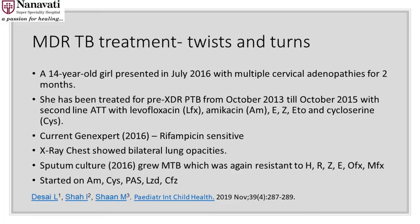To highlight that MDR-TB treatment is not simple — a case with a lot of twists and turns. A 14-year-old girl presented in July 2016 with cervical lymph node TB. She had been diagnosed with pre-XDR-TB in October 2013 and received second-line treatment till October 2015 on levofloxacin, amikacin for six months, ethambutol, pyrazinamide, ethionamide, and cycloserine. Her current GeneXpert showed rifampicin sensitive, but we said this did not seem possible. We pursued the culture — it grew MTB resistant to all first-line drugs including quinolones, suggestive of pre-XDR-TB with a mixed pattern.